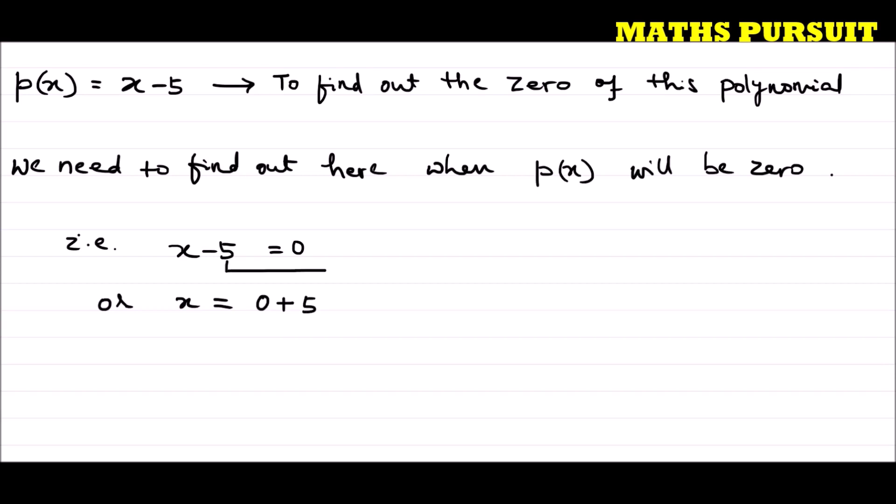What happened here? I just moved this minus five from left hand side to the right hand side. So we got x = 0 + 5, or I can write x = 5.